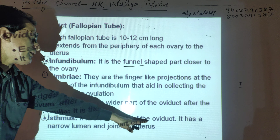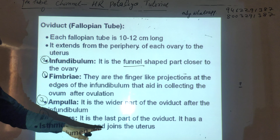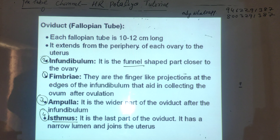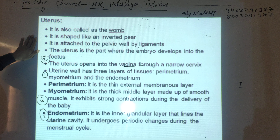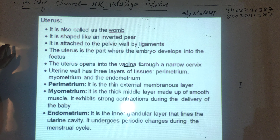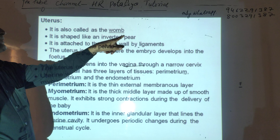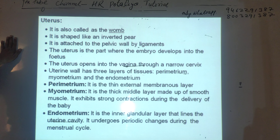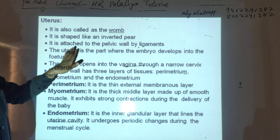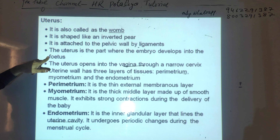The isthmus is the last part, with a narrow lumen that joins the uterus — it is the specific site for fertilization. Now, region number three is the uterus. The uterus is also called the womb and is inverted pear-shaped. It is attached to the pelvic wall by ligaments, and it is the part where the embryo develops into the fetus.